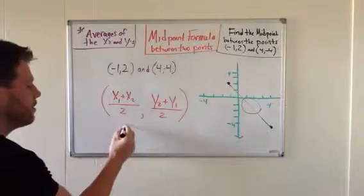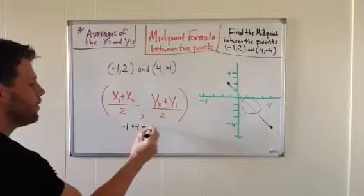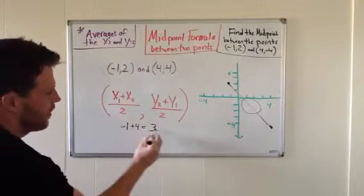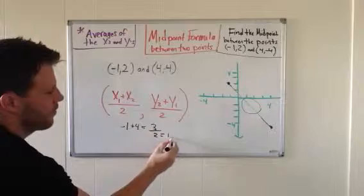The X's: -1 + 4, that's 3. Divide that by 2, we get 1.5.